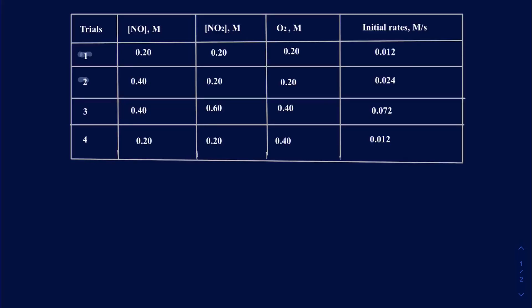If we focus on trial one and trial two, in trial one the concentration of NO is 0.2, and in trial two it is 0.4 — so that one is changing. But looking at NO2 and O2, those concentrations are not changing. So that's a good pair to pick to figure out how the change in NO concentration affects the initial rate.